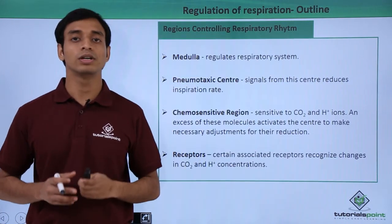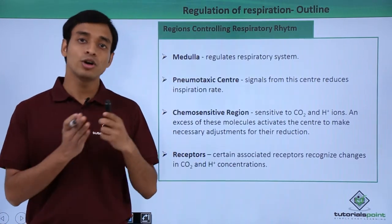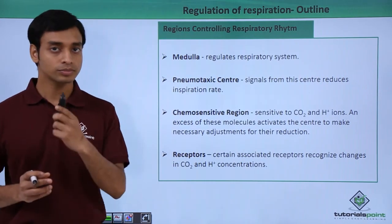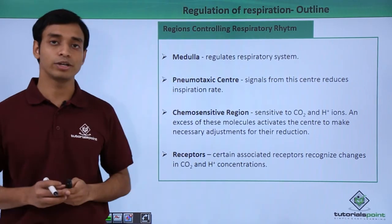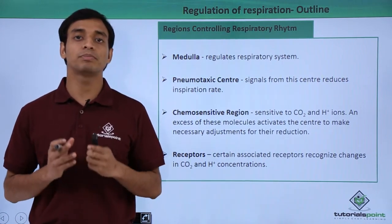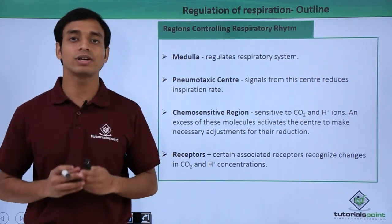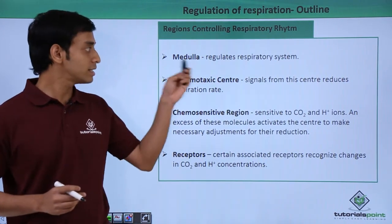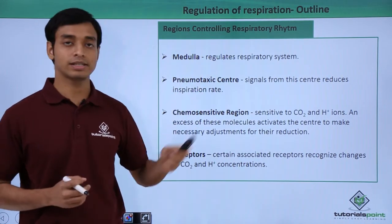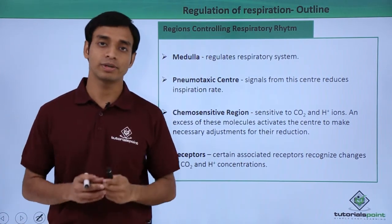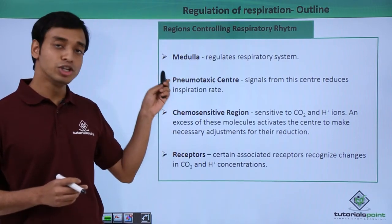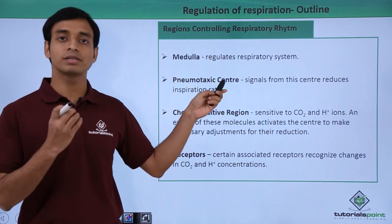The first center is known as the medulla oblongata. This is a part of the central nervous system of our brain, and it actually acts as the rhythm center — it regulates the respiratory system. The next part is known as the pneumotaxic center, which is basically located at the pons region of the brain.